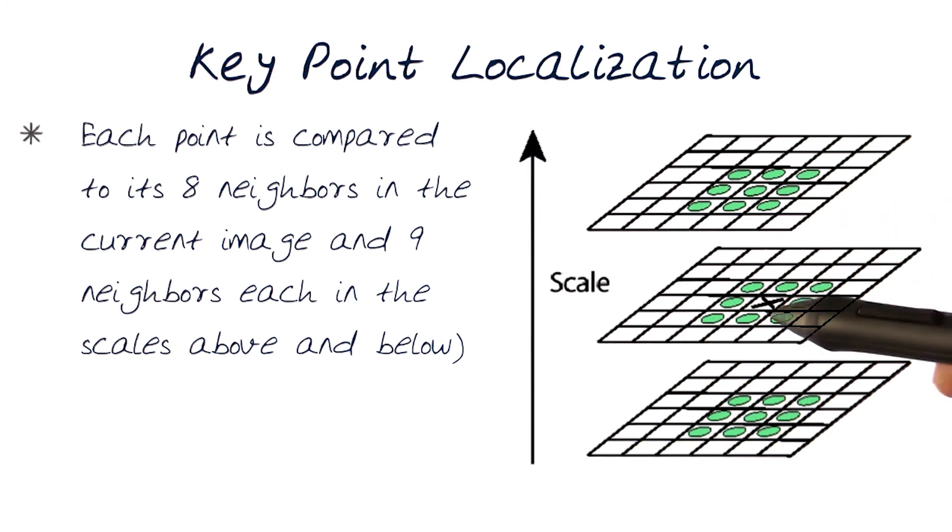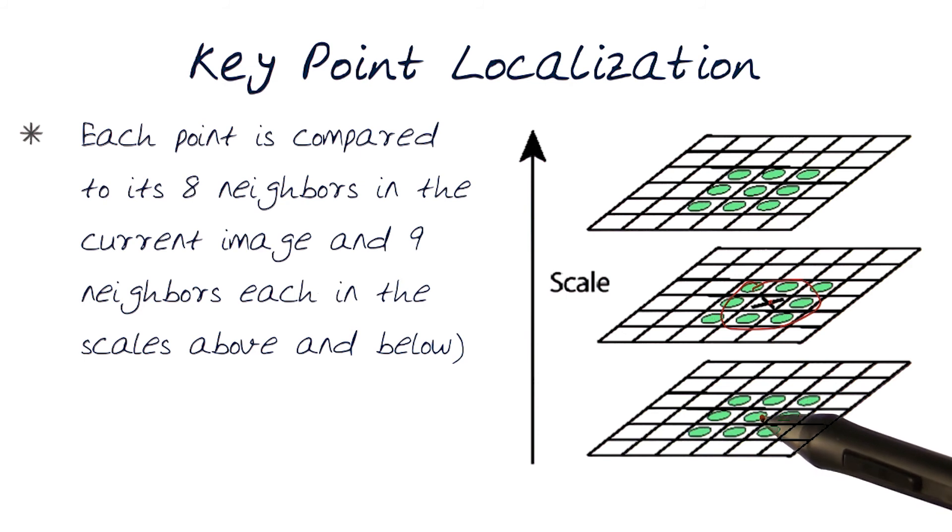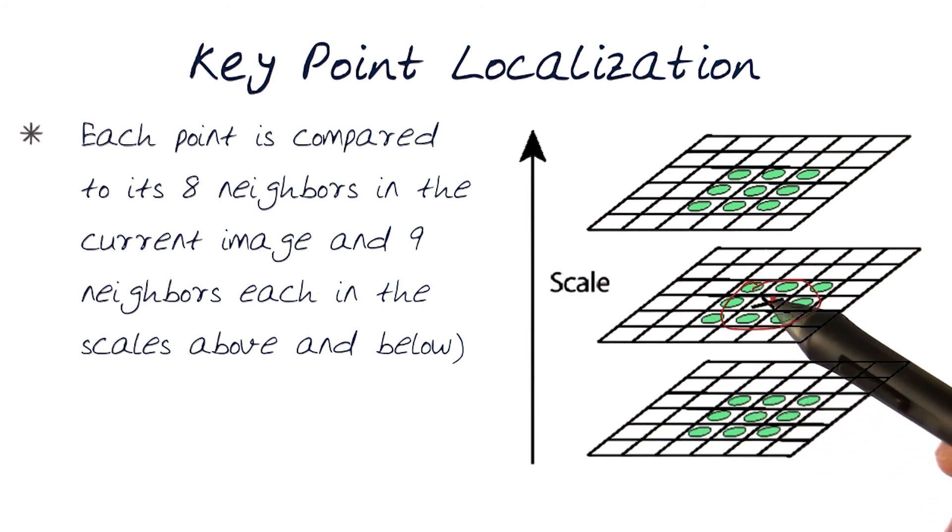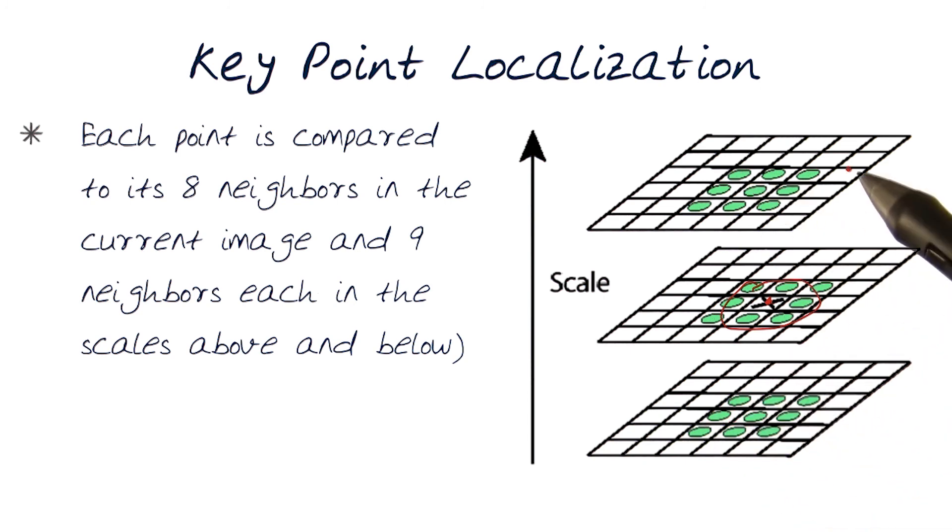In essence, what happens now is that basically at each point is compared to its eight neighbors, shown here. So, each point is compared to its eight neighbors, and then we can, of course, also scale it up and down. And in this case, each point is also compared to its nine neighbors above and below in scale. So, eight local neighbors at this point, and then above nine points below nine points. And these are, of course, different scales, which could be computed using, again, things like pyramids and stuff like that we've looked at.